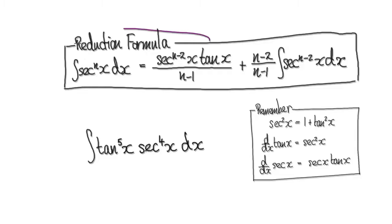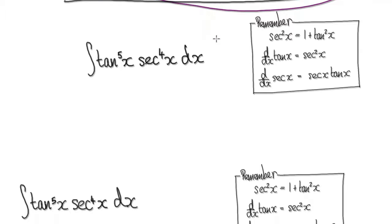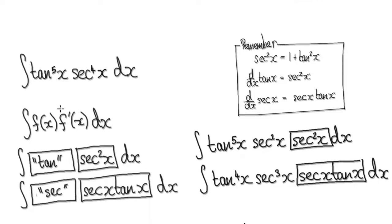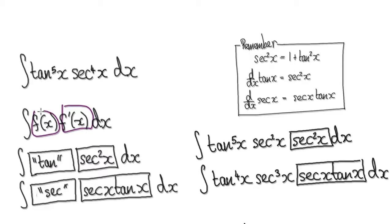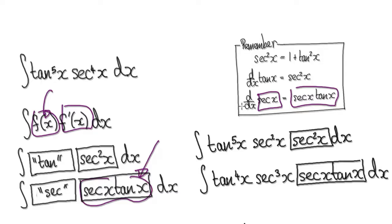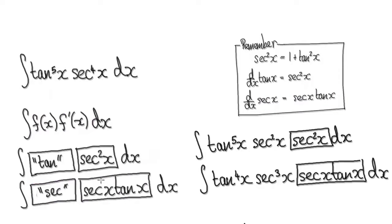Okay, so to do this, before jumping to the reduction formula, try to get something to be the exact derivative of another thing. So if you look at this, secant squared is the exact derivative of tan. So if you can write everything in terms of tan, then you know you can use substitution — it would be easy to integrate. If you can get something to be the exact derivative of another thing, then you know it's going to be easy to integrate.